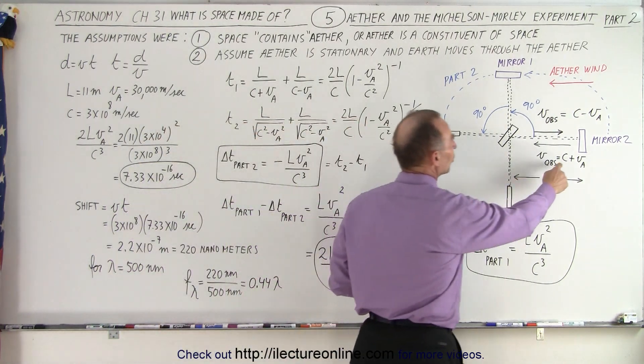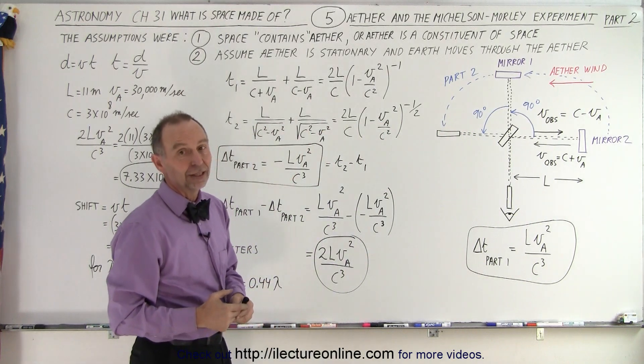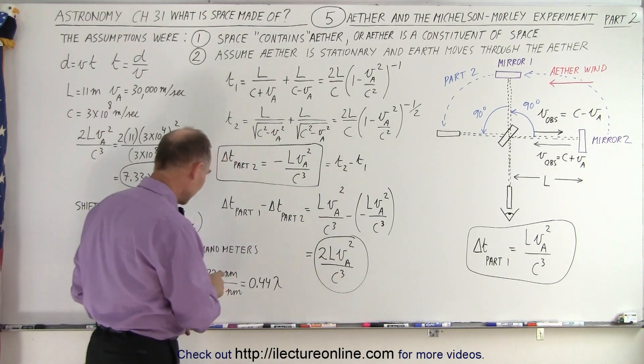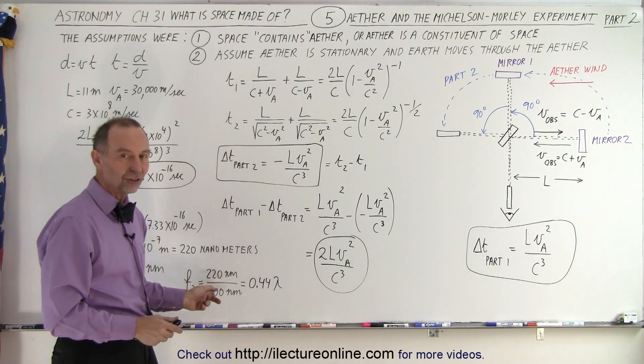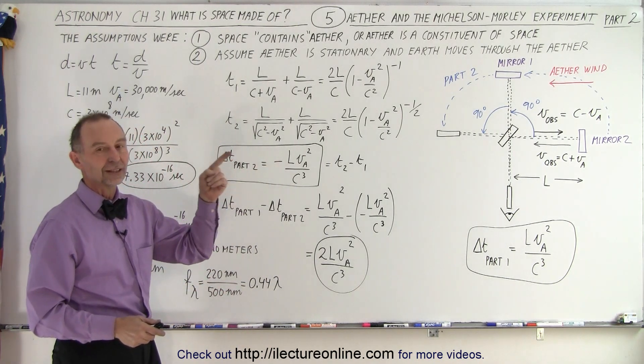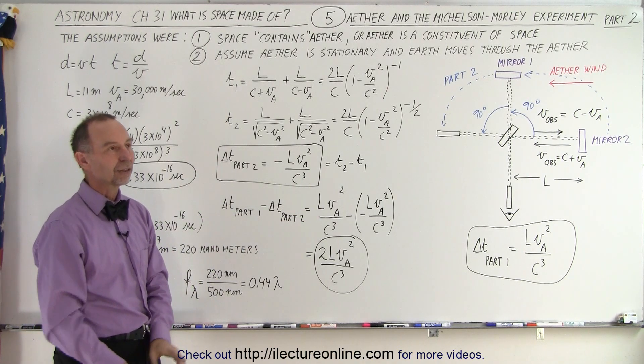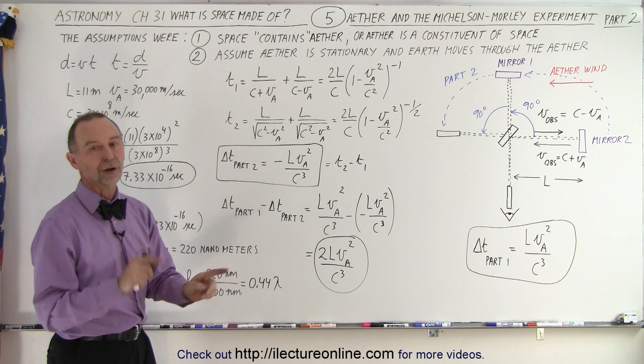So if we assume this to be true, we assume that the ether was affecting the speed of light, and it turns out if it was, we should have been able to see the shift. Since we didn't see the shift, the assumption that ether affects the speed of light is wrong. It does not affect the speed of light. The speed of light travels the same in any direction.